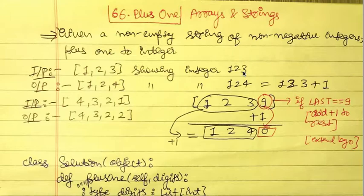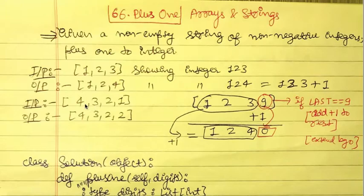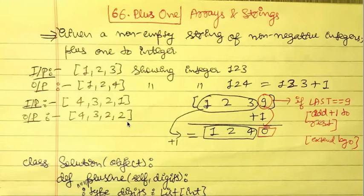If the input array is [4, 3, 2, 1], representing 4321, the output will be [4, 3, 2, 2] since 4321 plus one equals 4322. Now let's consider two interesting cases. The first interesting case is where the last digit — the rightmost digit — is nine.